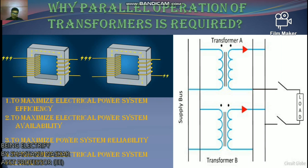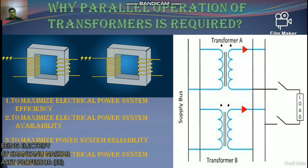Number two is to maximize electrical power system availability. If a number of transformers run in parallel, we can shut down any one of them for maintenance while the other parallel transformers serve the load without total interruption. Number three is to maximize power system reliability and flexibility. If any transformer running in parallel is tripped due to a fault, the other transformers will share the load, so power supply may not be interrupted — provided the shared load does not overload the remaining transformers.